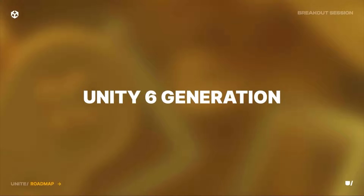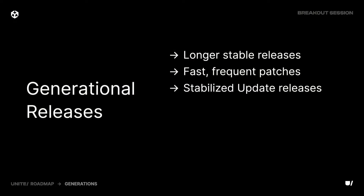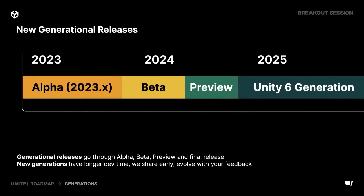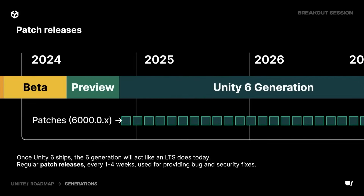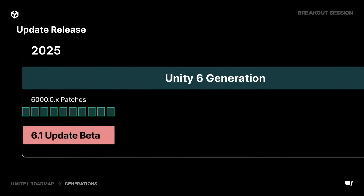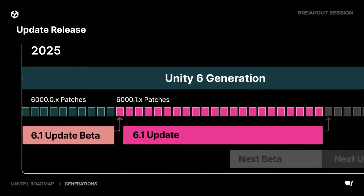Unity will be releasing Unity 6.1 with a generational release model. It will be similar to Unity's LTS — long-term support — but now moving to much longer two-year generations, giving them more time to increase engine stability. They'll integrate fast, frequent patches — smaller patches that fix bugs — and larger update releases with more features. Patches will arrive every one to four weeks, while update releases will incorporate all those patches together as one bigger update with a stabilization period.